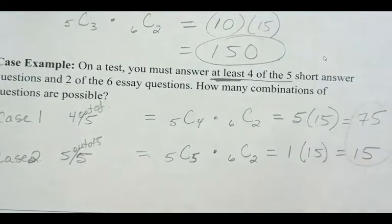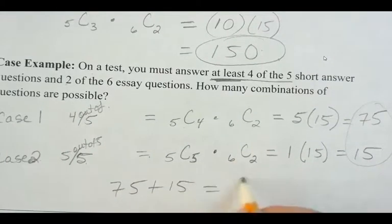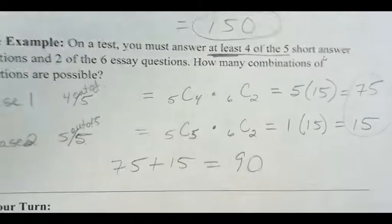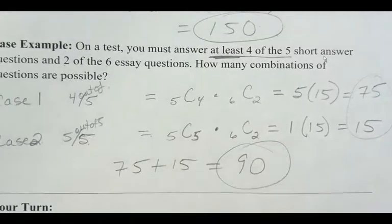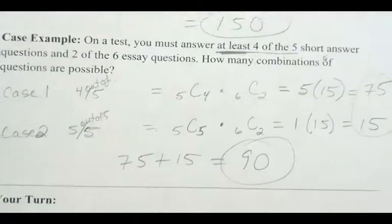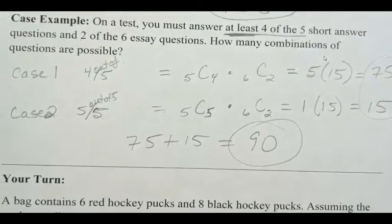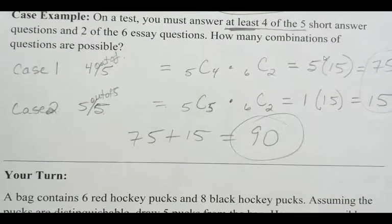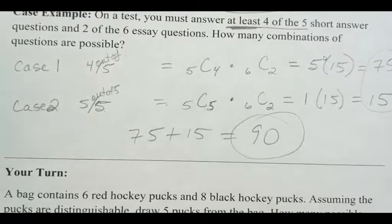So now, what do I have to do to those two? I have to add up my cases. And then? So there's 90 total combinations that are possible. Awesome.